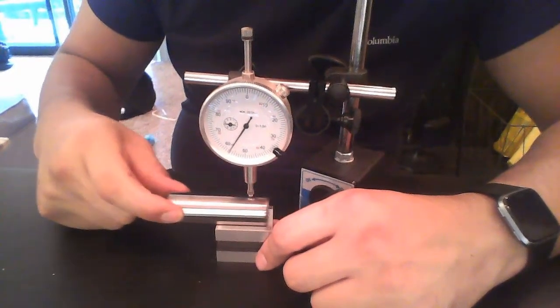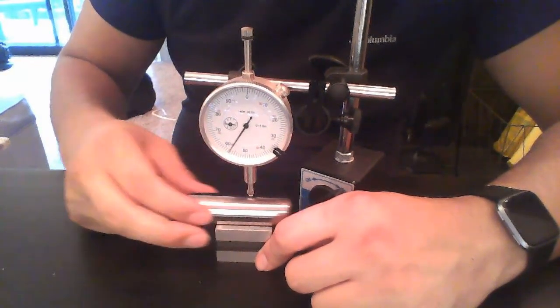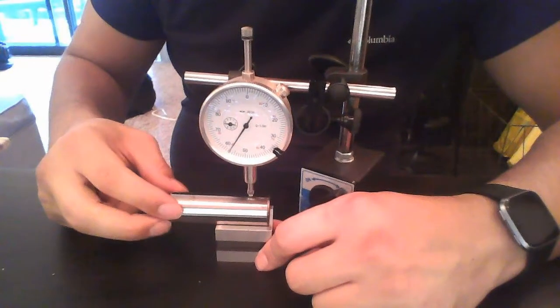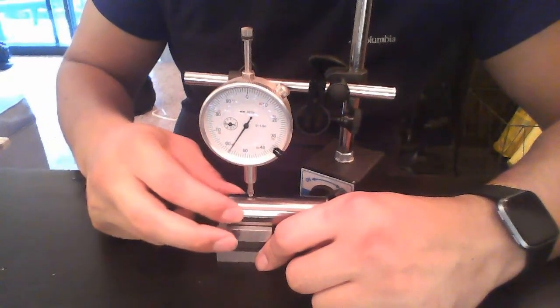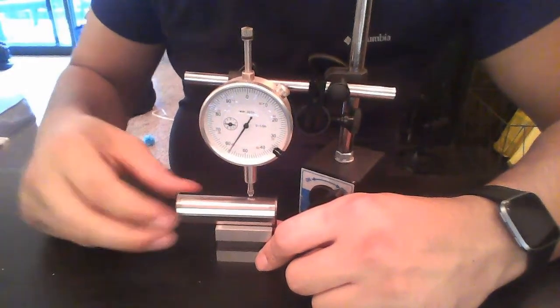Again, to measure straightness along a cylinder, we're not rotating. I'm moving it along the length, but I'm not rotating the cylinder. I'm leaving it stationary. This is measuring straightness at one cross section.